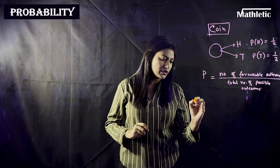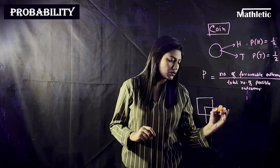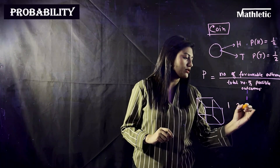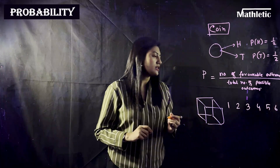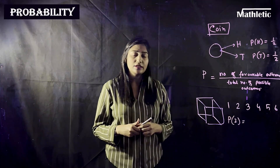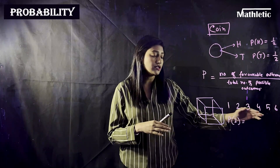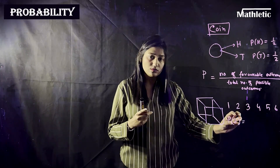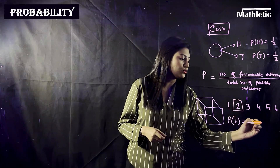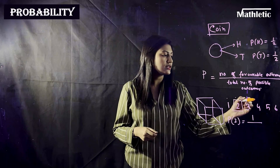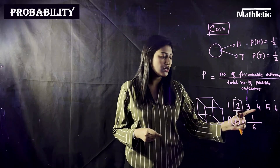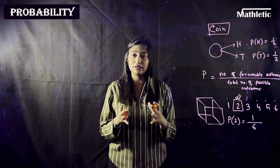Let's look at a different example. Suppose you have a cubical six-sided die with numbers one through six written on it. If you need to find the probability of getting a two, you get a two only when the die lands with two on top. There is only one two on the die, so the favorable outcome is one, and the total options are six — giving a probability of one-sixth.